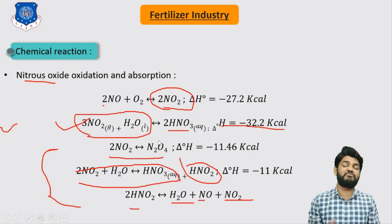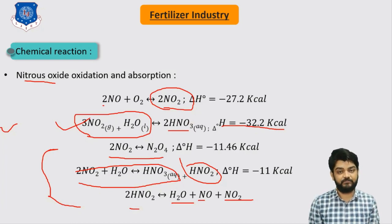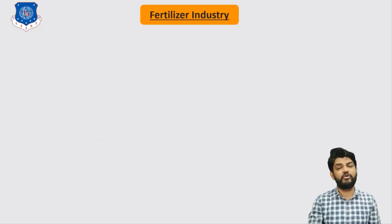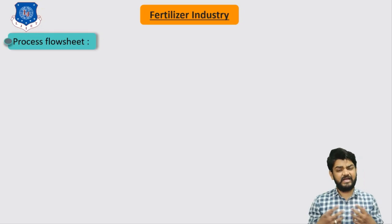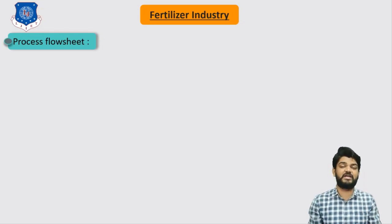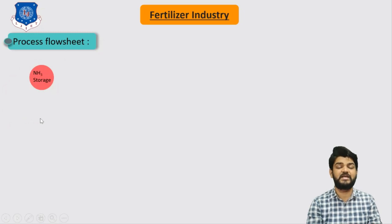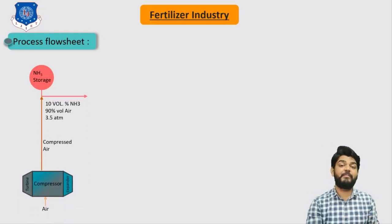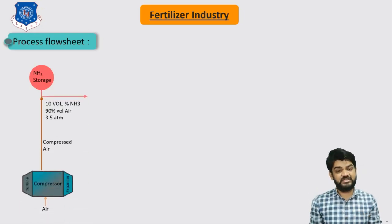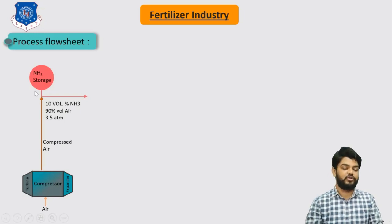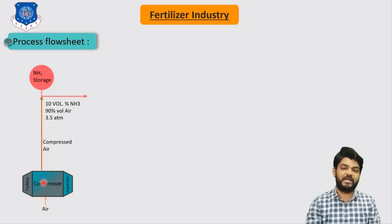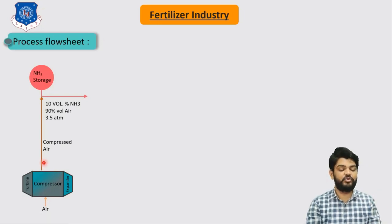All of the reactions are very exothermic and will liberate a large amount of heat. Now let's move to the flow sheet. This process flow sheet is very complicated. We use ammonia as the raw material, taking it from the spherical storage tank discussed in the previous video. This ammonia is combined with compressed air to fulfill the oxygen requirement for oxidizing the ammonia. We use a compressor to compress the air, giving us more oxygen for oxidation. The composition of reactants is 10% ammonia by volume and 90% air by volume, with 3.5 atmosphere pressure maintained by the compressor.